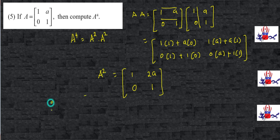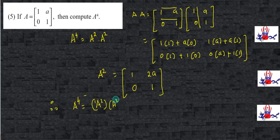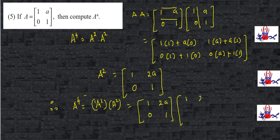Therefore, A to the power 4, which is nothing but A squared multiplied with A squared, would now be [[1, 2a], [0, 1]] multiplied with [[1, 2a], [0, 1]].